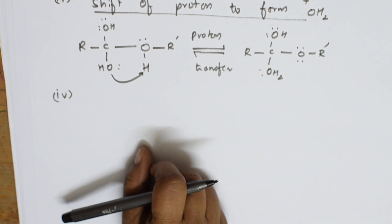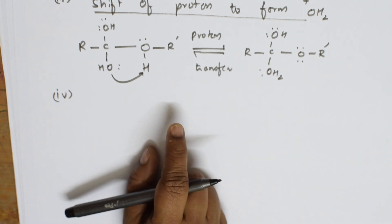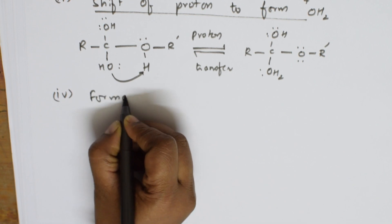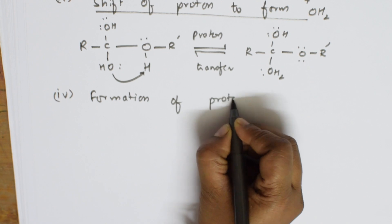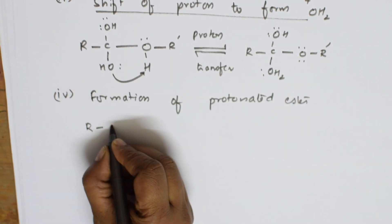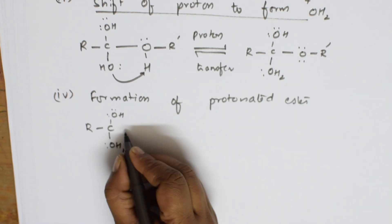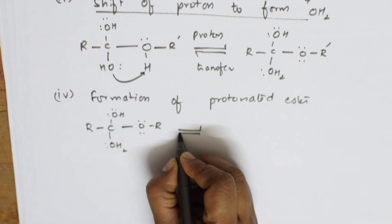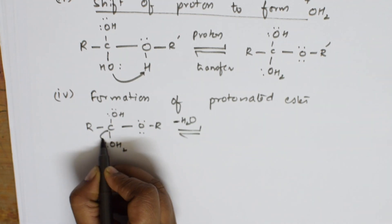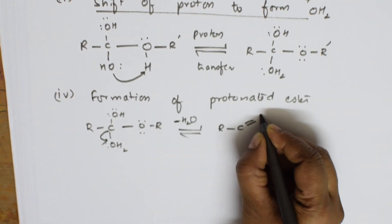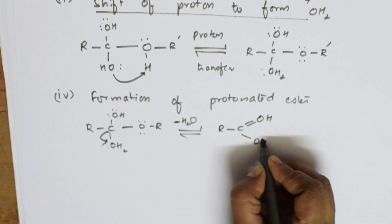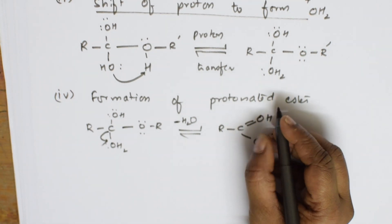Step 4: The tetrahedral intermediate loses a water molecule. This forms a protonated ester. The water molecule (OH₂) departs from the intermediate R-C(OH)(OH₂)(OR'), and the result is R-C(=OH⁺)-OR' — the protonated ester, which carries a positive charge on the oxygen.